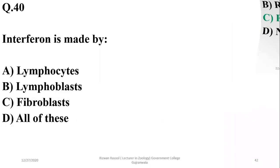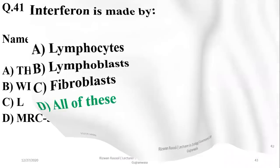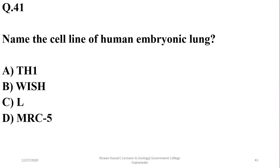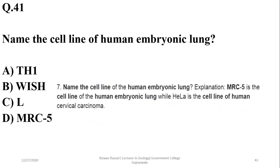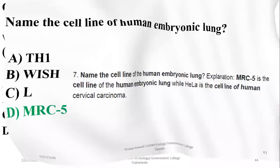Question 39: Interferon is made by lymphocytes, lymphoblasts, and fibroblasts — all of these. Question 40: Name the cell line of female embryonic lung — it is MRC-5. HeLa is the cell line of cervical carcinoma. So delta is the answer.